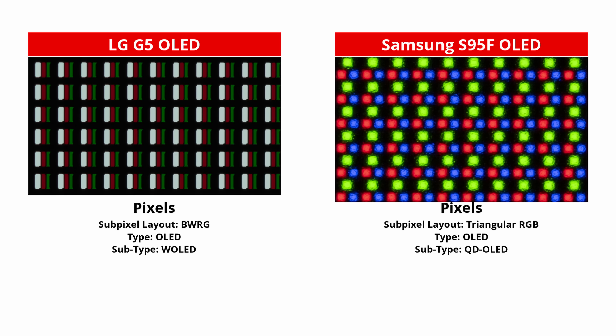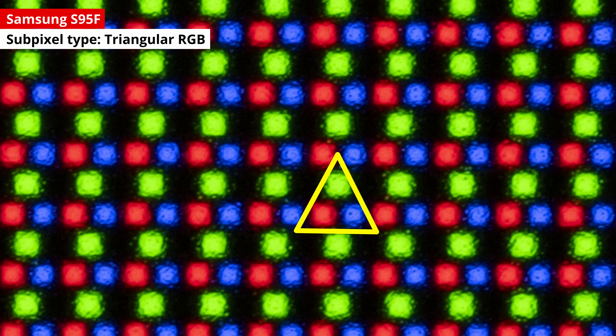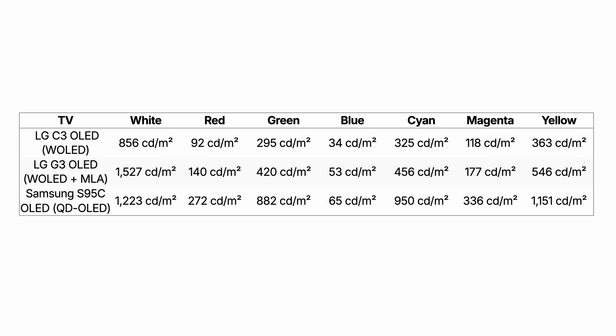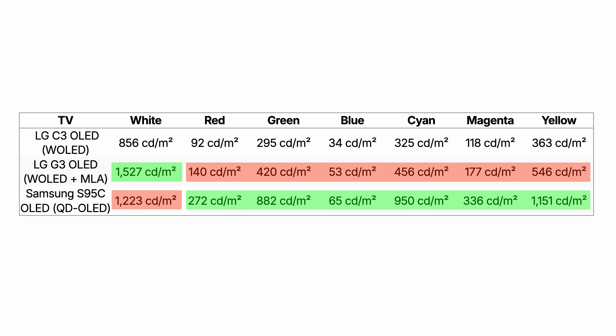Quantum dots, meanwhile, are incredibly light efficient. They can take blue light and convert it to red or green without needing an electrical charge, allowing QD OLED panels to produce bright, saturated colors more efficiently than W OLED panels, MLA layer or not. We can see that the two panels use entirely different subpixel structures. QD OLEDs use a combination of RGB subpixels in a triangular formation to produce pure white. Meanwhile, W OLEDs typically have an RWBG pixel structure, relying on the white subpixel to display pure white at higher luminance levels.